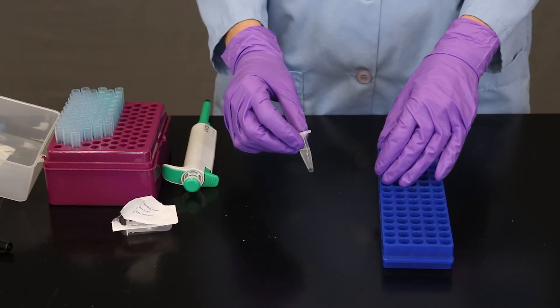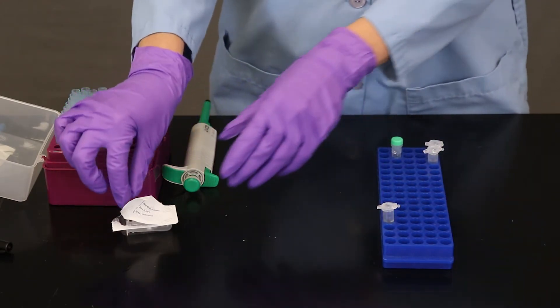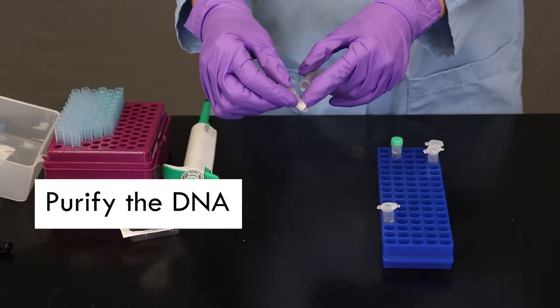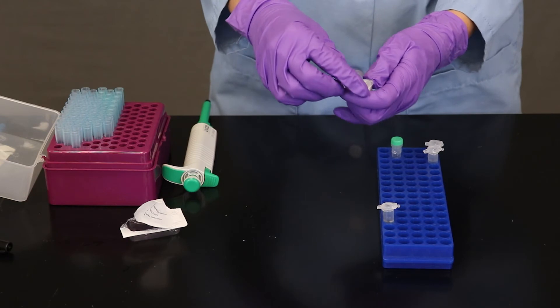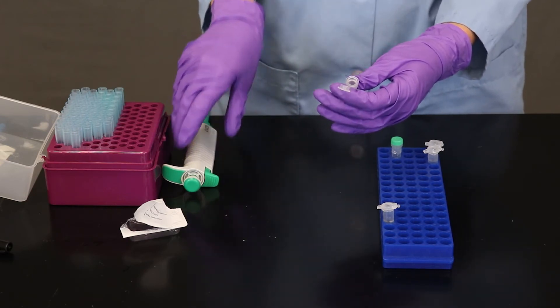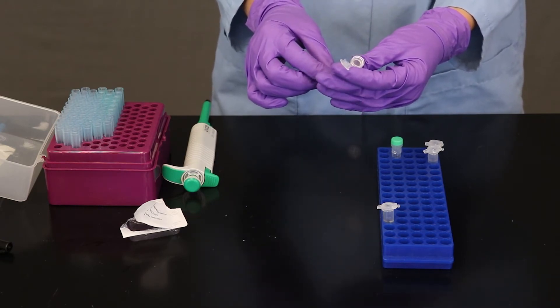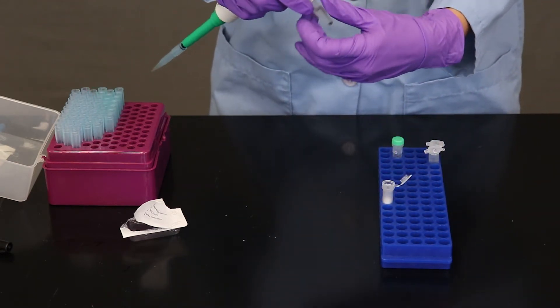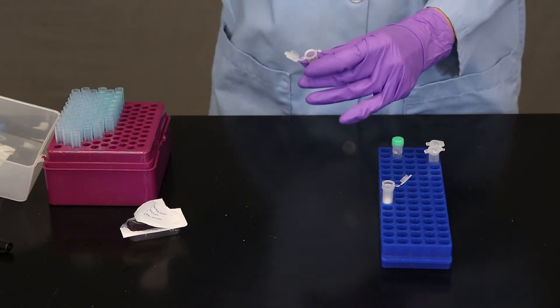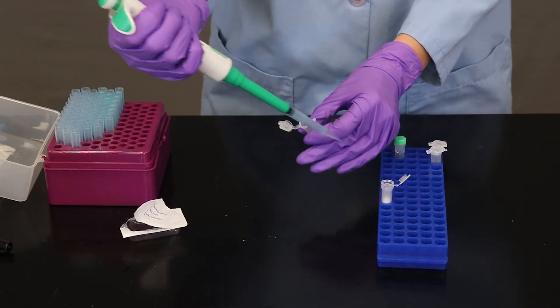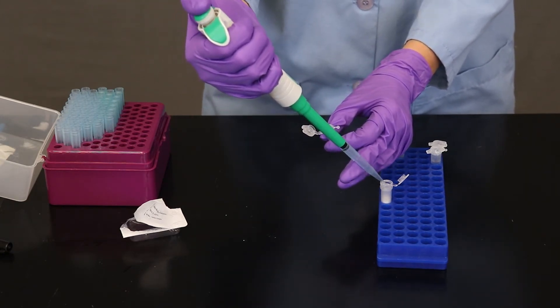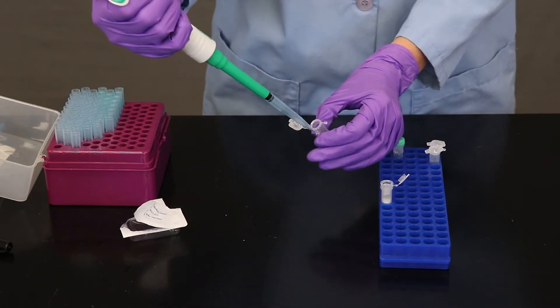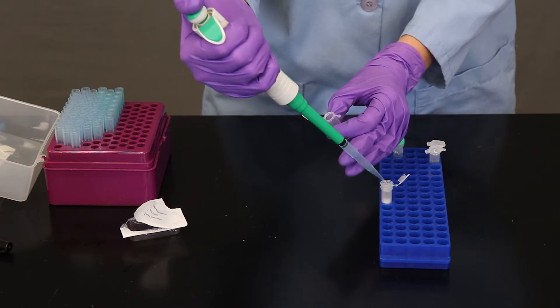So here we have our tube with the precipitated DNA because we've added ethanol to it. And we're going to use this mini column to help purify the DNA. So inside is a little tiny piece of filter paper and I'm going to pipette the DNA solution that I have into here. And we're going to spin it in the centrifuge so that it will push the solution through the mini filter. So I'm going to try to get all of this solution, but not get the insect bits.